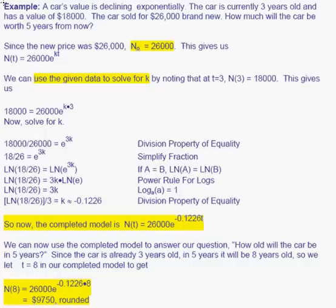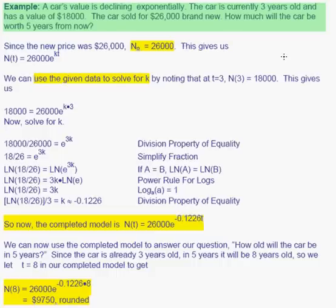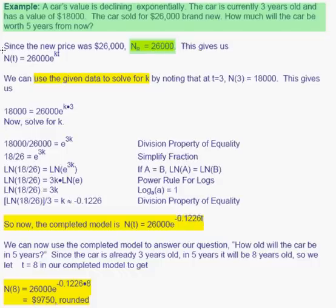This next example is like the previous one except we are not given the growth constant — we have to calculate it. A car's value is declining exponentially. The car is currently 3 years old and has a value of $18,000, and it sold for $26,000 brand new. How much will the car be worth 5 years from now? We use the model n as a function of t equals n sub not times e to the kt, and in this case our initial value n sub not is 26,000.